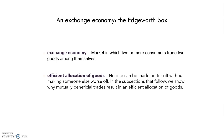Suppose that we have two goods initially allocated so that both consumers can make themselves better off by trading with each other. This means that the initial allocation of goods is economically inefficient. In an efficient allocation of goods, no one can be made better off without making someone else worse off. We will show why mutually beneficial trades will result in an efficient allocation of goods.